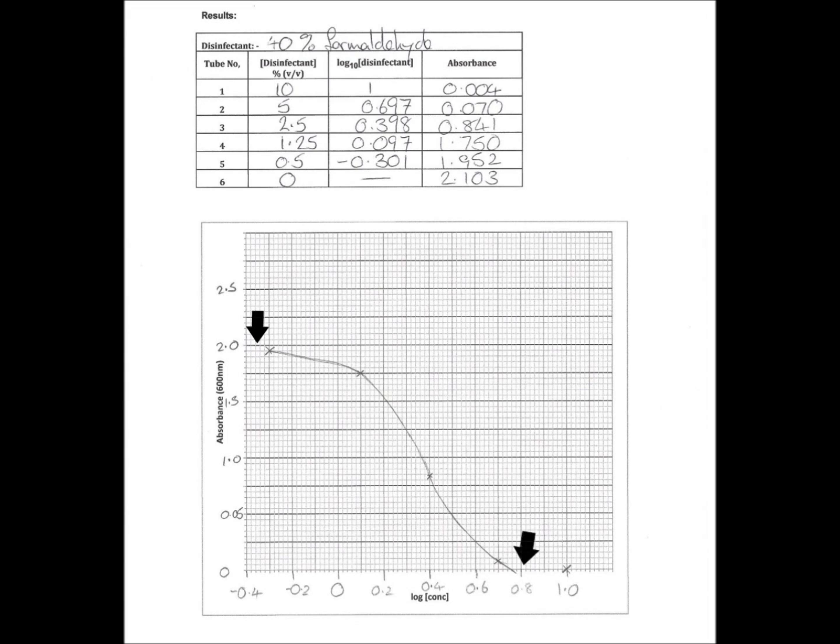And secondly, I've extrapolated the line so that it crosses the x-axis. So my last point, which is 0.004, is so small as to essentially be zero and within the sort of range where the spec can't read very accurately. So it's likely that the point where the line crosses the bottom axis is in fact somewhere between my last two points, and I've extrapolated that by eye.